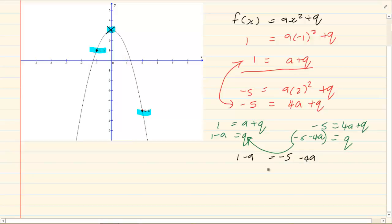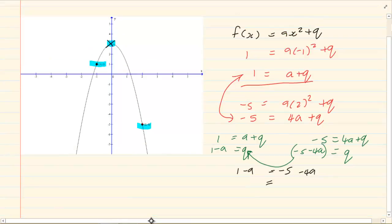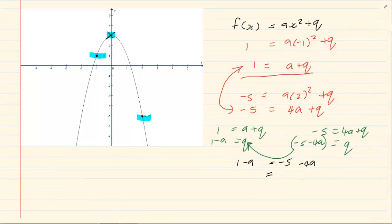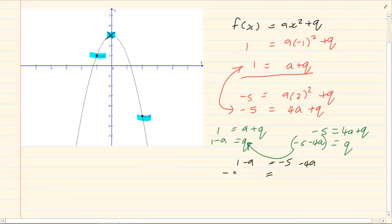The norm is that they ask the first previous ones that we've done. But on rare occasions they ask this one. So you have to know how to do this. So we have minus a plus 4a is equal to minus 5 minus 1. So we have 3a is equal to minus 6. A is equal to minus 2.